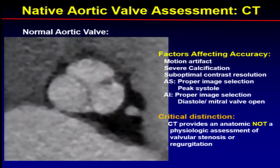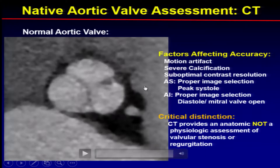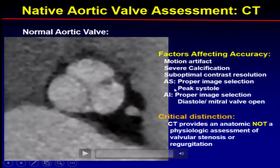Let's start off with the aortic valve. This is a normal aortic valve, and when we do CT, there are a lot of things that affect how we look at these images in terms of whether there's motion artifact, whether there's calcification, contrast resolution, and proper imaging — so we make sure we get both systole and diastole.